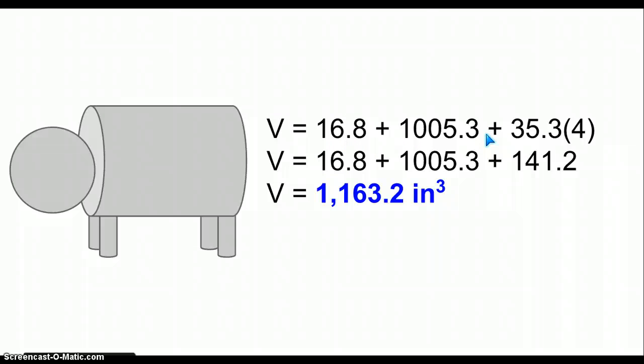Now to find the full volume of the cat, you take the measurement of the volume of the head, which is 16.8. You take the volume of the large torso, which is about 1,005.3, and then you take the measurements of the small legs, which are the small cylinders, which is about 35.3. And you have to remember to multiply it by 4, since there are 4 legs. And once you add those measurements together, you get a full volume of around 1,163.2 inches cubed for the full volume of the fattest cat in the world.